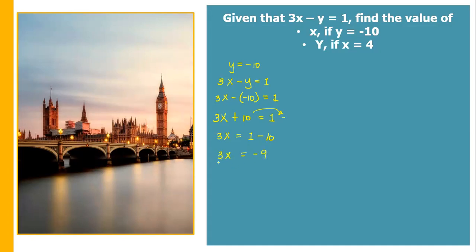Then proceed to division to find the value of x. Divide both sides by 3: 3 divided by 3 equals 1, so x equals negative 9 divided by 3, which equals negative 3. The value of x is negative 3 when y is equal to negative 10.